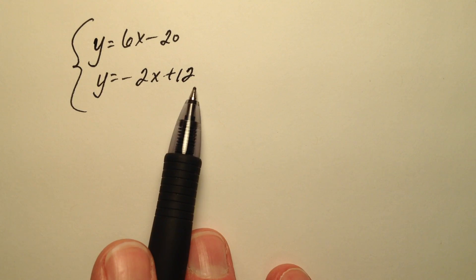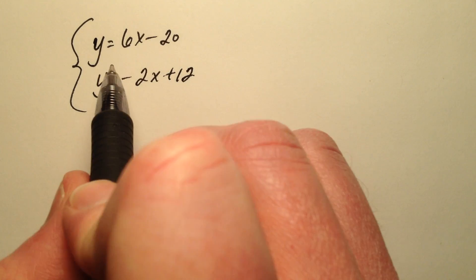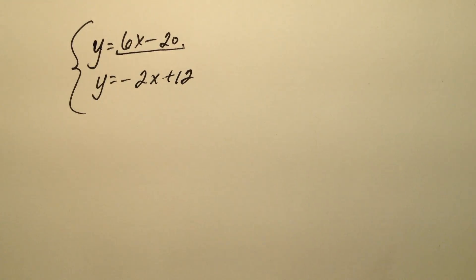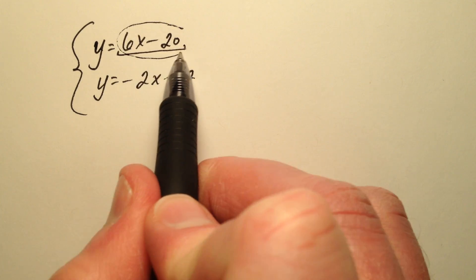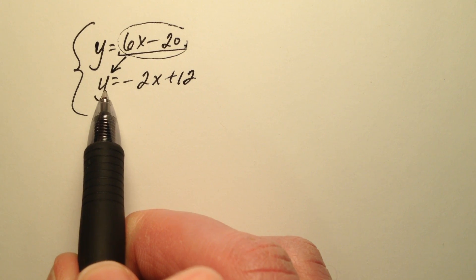It was given to us that way. So in the first equation, 6x minus 20 is equivalent to y. I can take this 6x minus 20 and substitute it in for the y of the other equation.